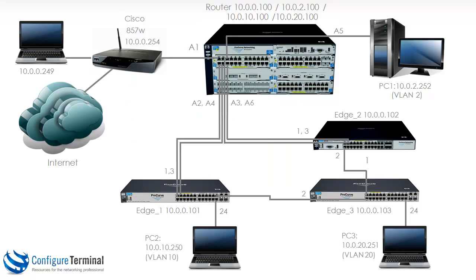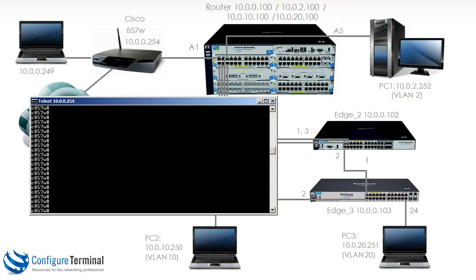The reason it works is because the networking devices are in VLAN 1 and the Cisco router knows about VLAN 1. But can the Cisco router ping PCs 1, 2, and 3, which are on different VLANs? On the Cisco router, pinging 10.0.10.250 — notice the ping fails, because the Cisco router doesn't know about those subnets.